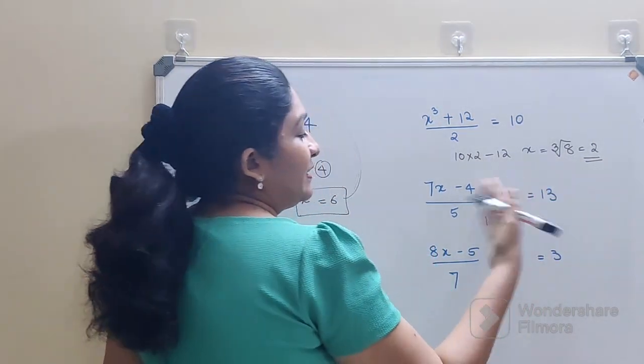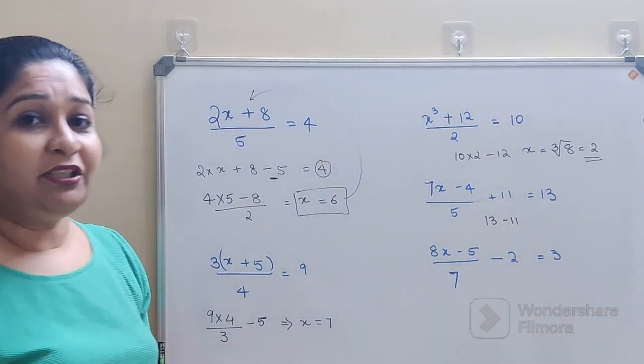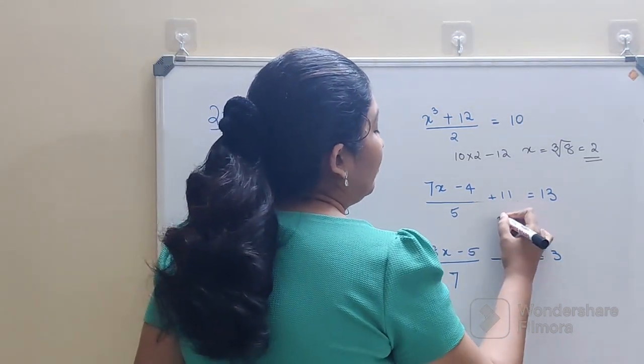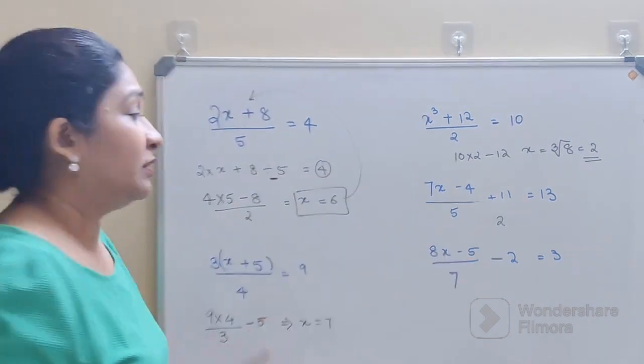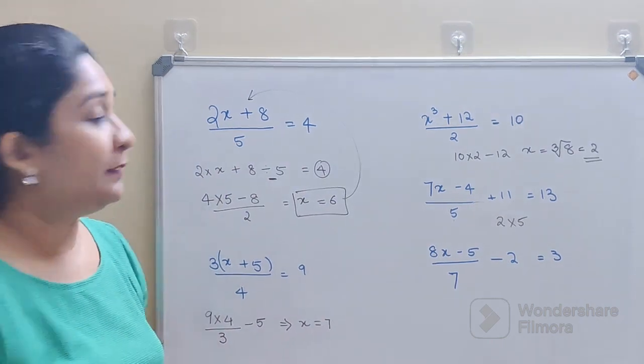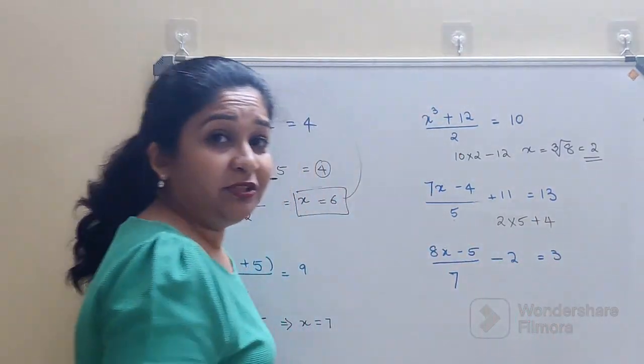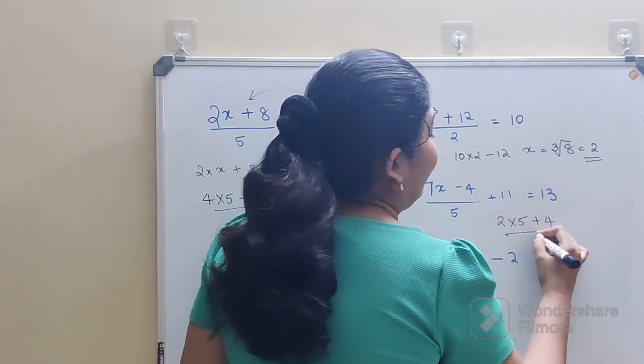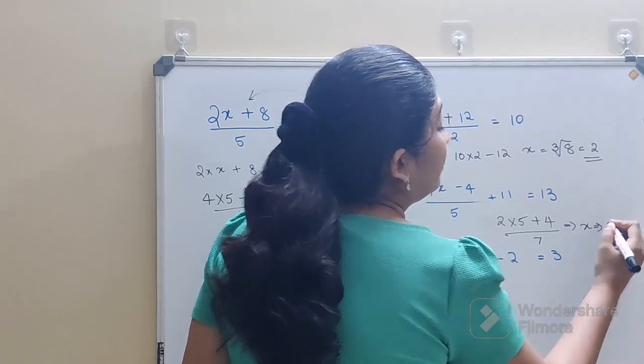So we have 13. So 13, when you go to this side, this is plus 11, so we will do minus 11. That gets you 2. So now the number which you have gotten is 2. And then here what is happening first is division. So 2 into 5 gets you 10, then plus 4 will get you 14, divide by 7. So I can say value of x is nothing but 2.